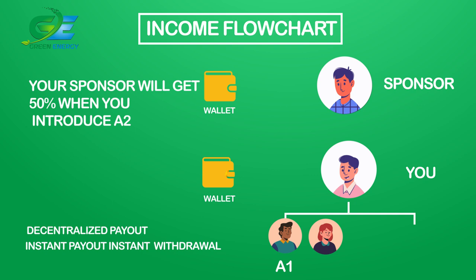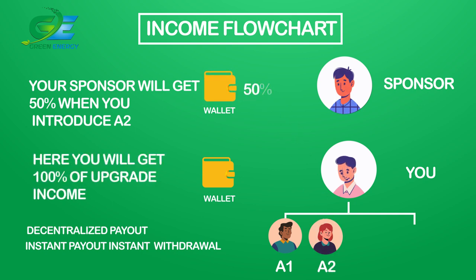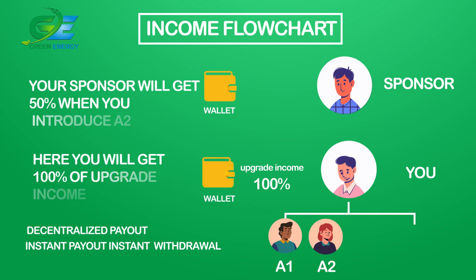Your sponsor will get 50% when you introduce A2. Here you will get 100% of upgrade income.